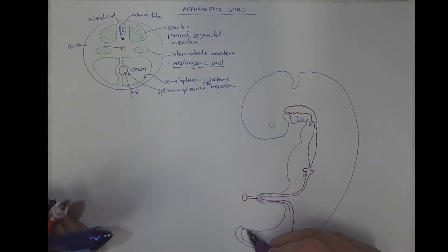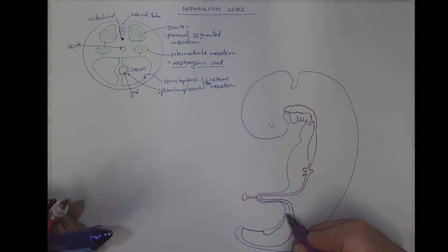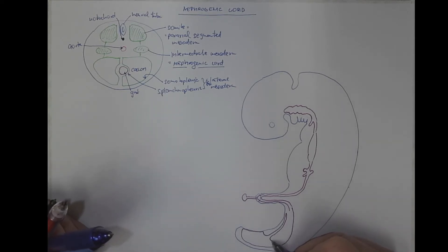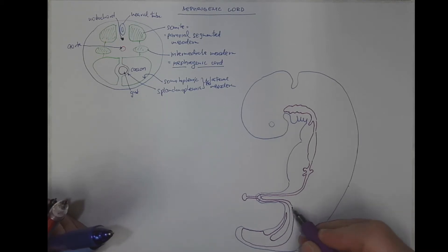And the hindgut, with the cloaca, and the blindly ending projection called allantois, and the rest of the hindgut.